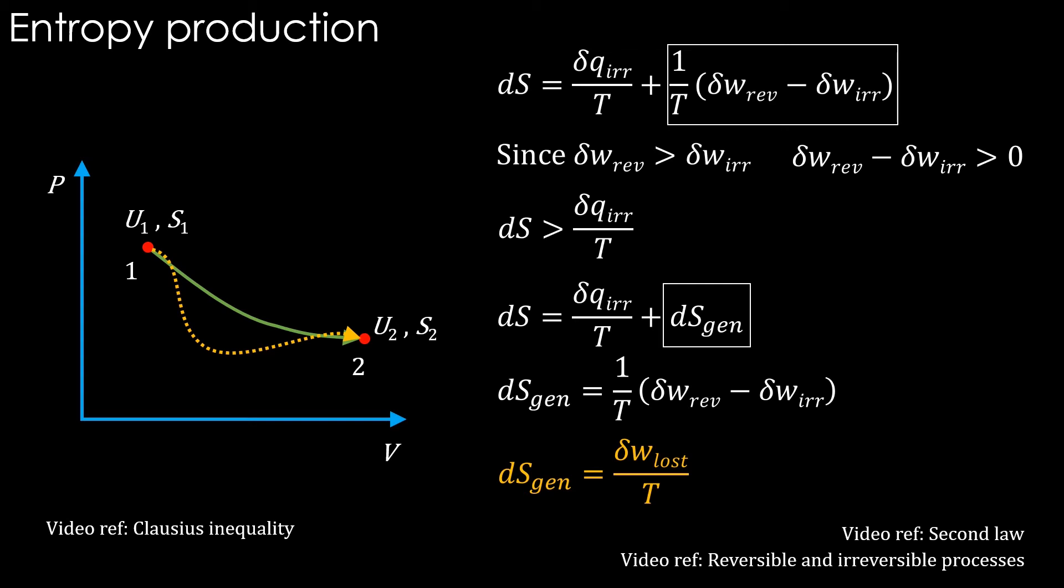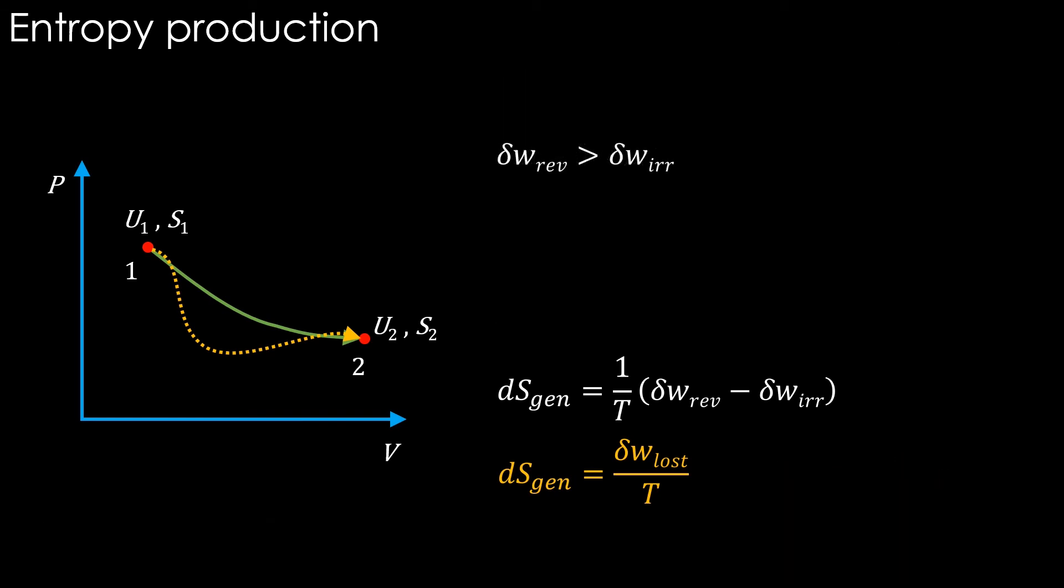The lost work is also referred to as the exergy destruction. It equals T times ds generated. The important takeaway here is the idea of entropy production.